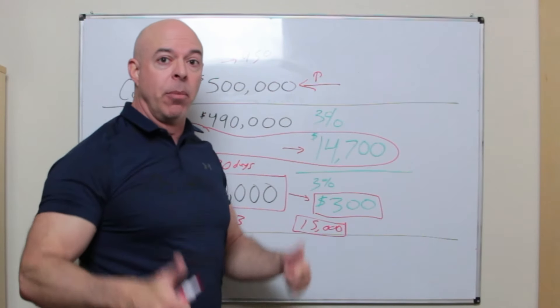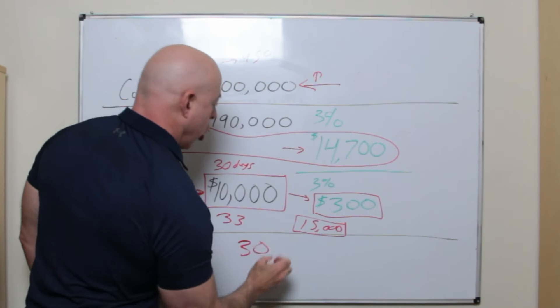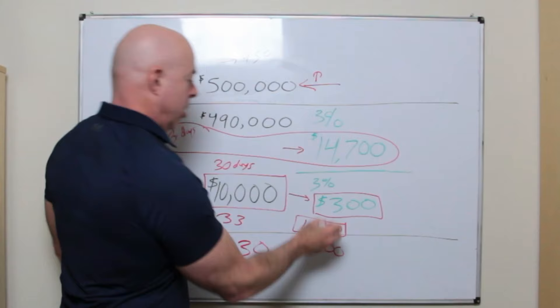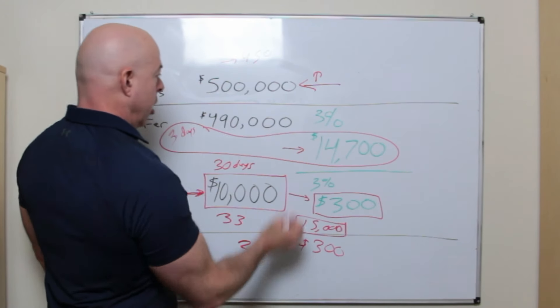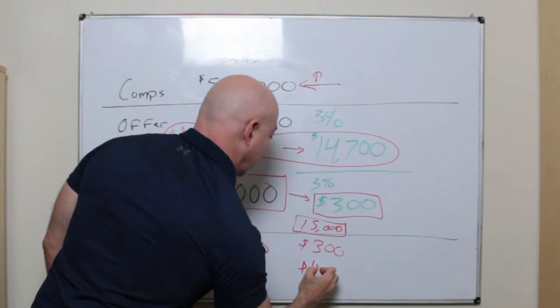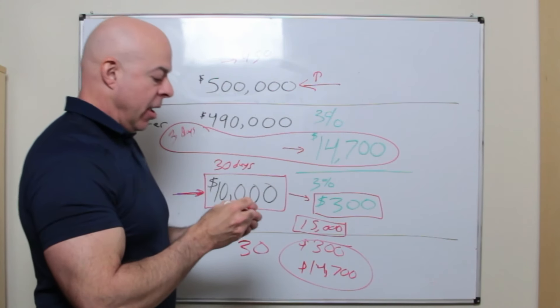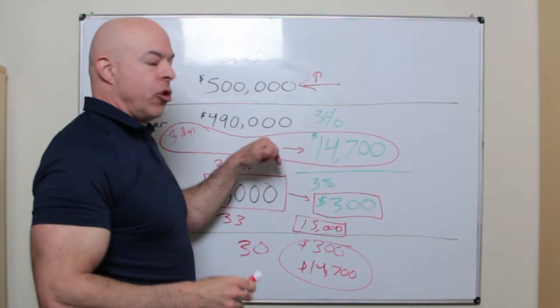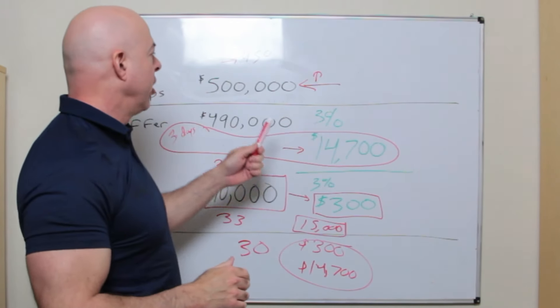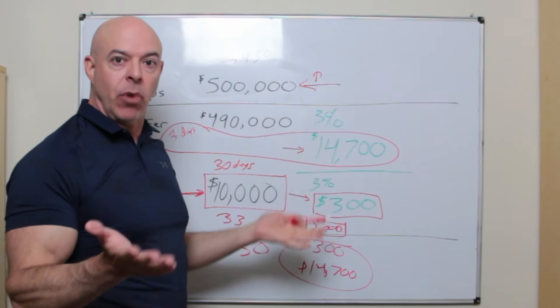They'll grab another home and they'll list it because what would they rather do in the next 30 days? Work hard to make another $300 or list another house and hopefully in 30 days, make another $14,700. I think you can see that for a realtor to turn over homes fast and make the best use of their time, they want to sell every house just under market, right?